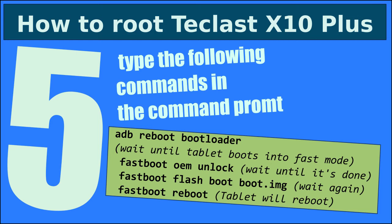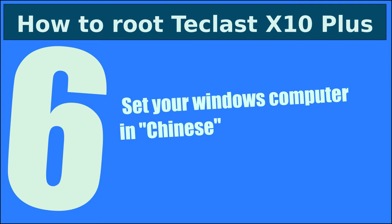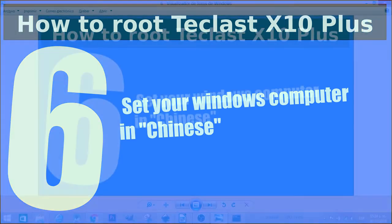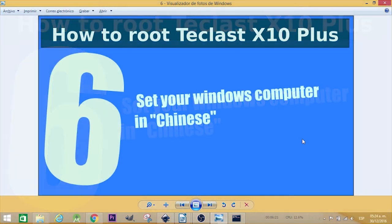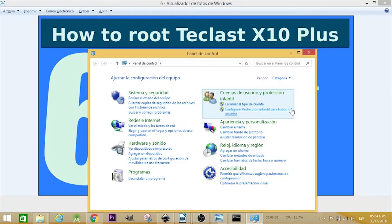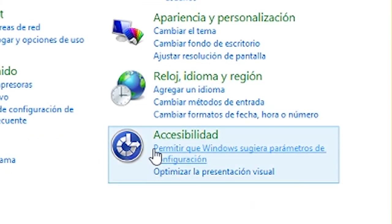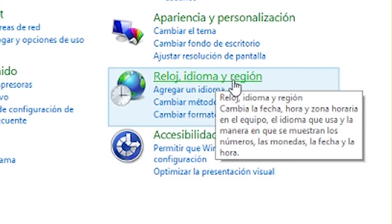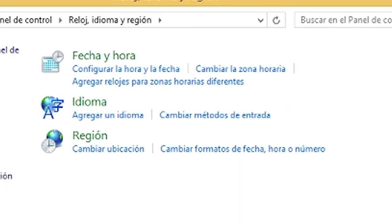Remember to do all these steps one by one. Next, you need to set your Windows computer language to Chinese. To do that, go to Options or Configuration, then go to the Control Panel, and then to Clock, Language, and Region.